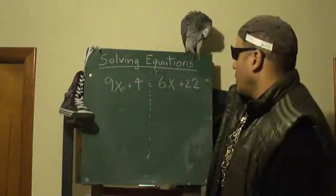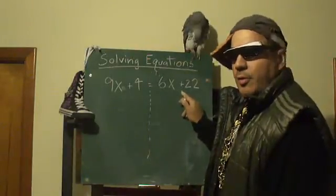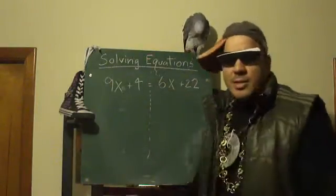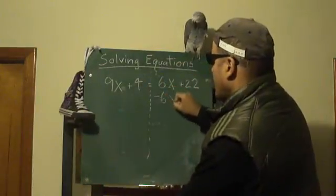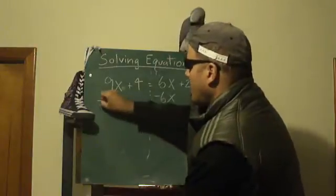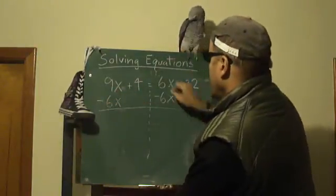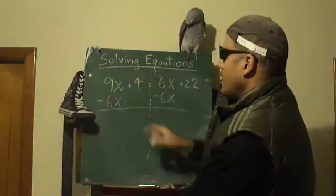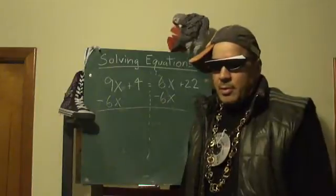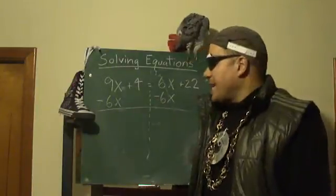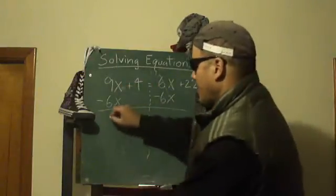We have a 6x on the right side. How can we get the 6x from this side to that side? It's connected by addition, so we undo it with subtraction. We subtract out 6x from this side, and we have to do the same thing on the other side — minus 6x. 9x minus 6x are like terms, so we combine them: 9x minus 6x becomes 3x.